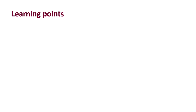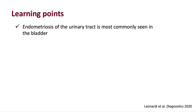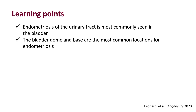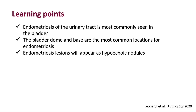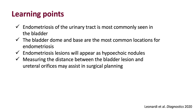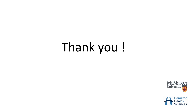In conclusion, endometriosis of the urinary tract is most commonly seen in the bladder. The bladder dome and base are the most common locations for endometriosis. Endometriosis lesions will appear as hypoechoic nodules. Measuring the distance between the bladder lesion and ureteral orifices may assist in surgical planning. Thank you for listening.